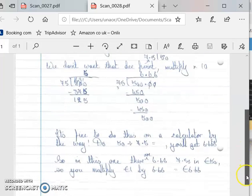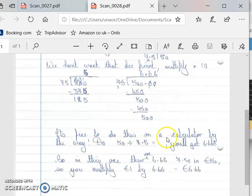And like I said, it's fine to do this on the calculator, and you just do 50 divided by 7.5 and guess what you'll get—6.666.